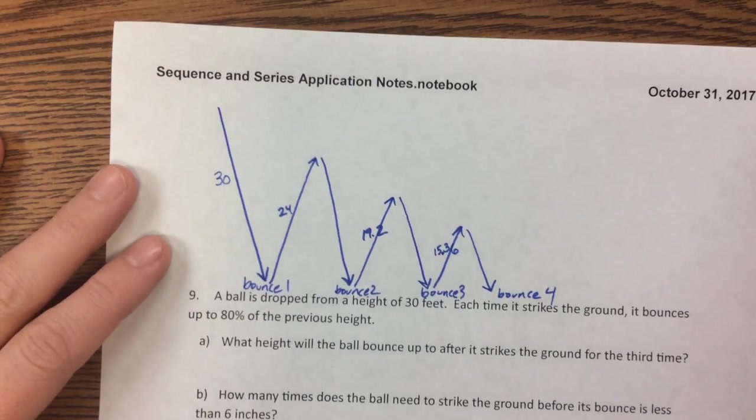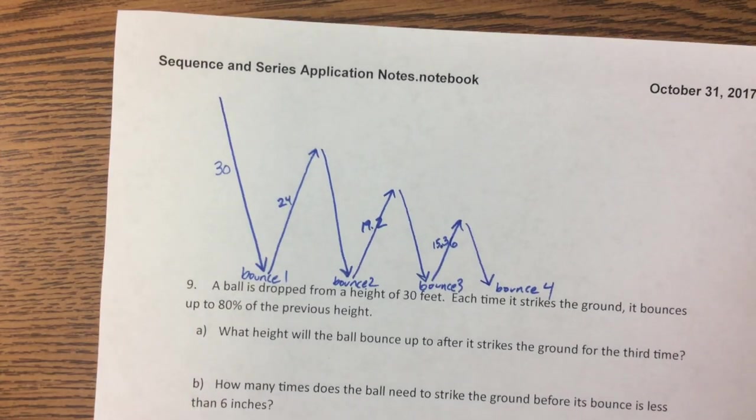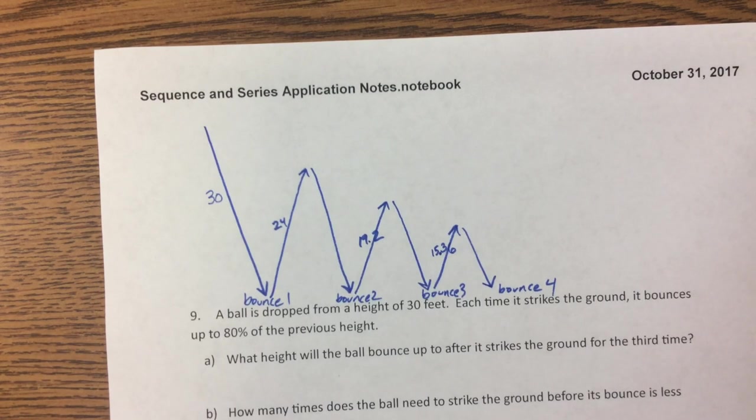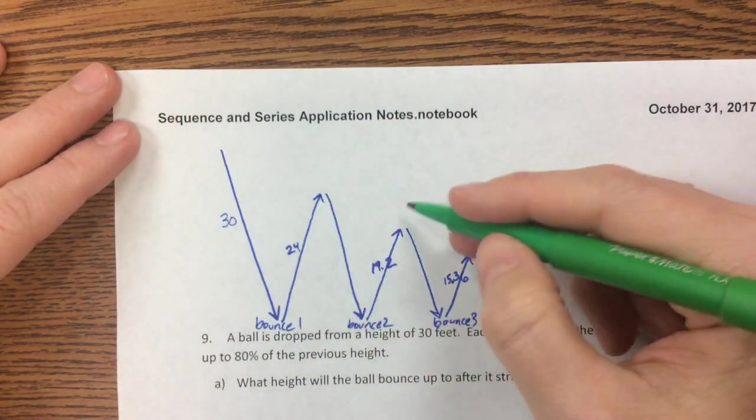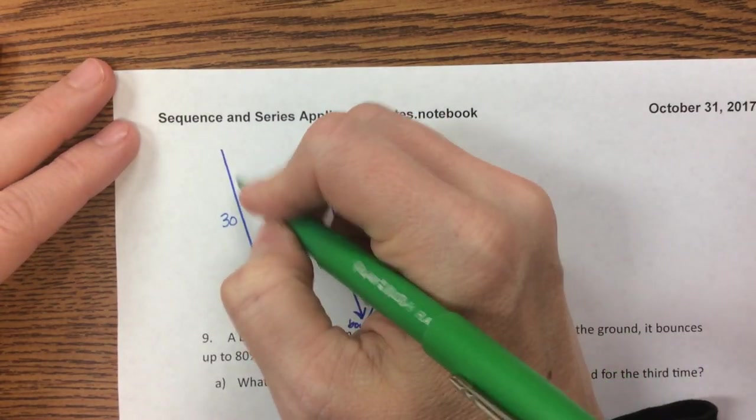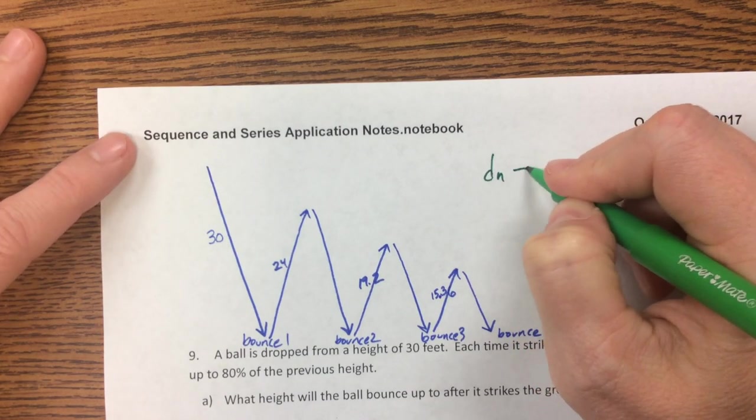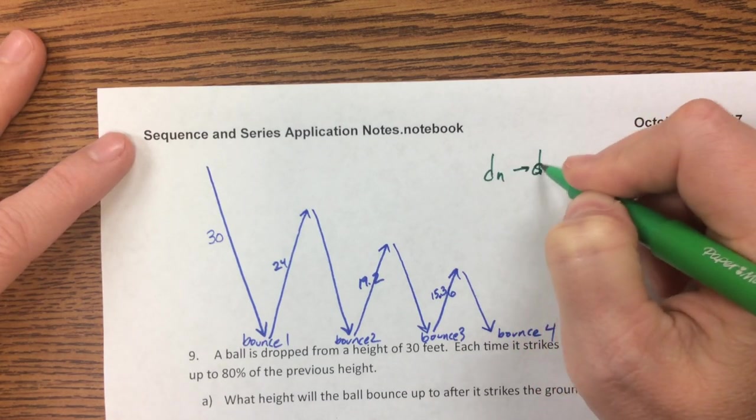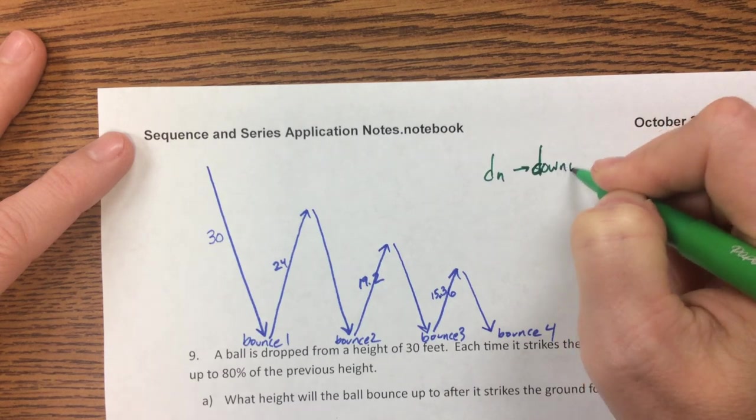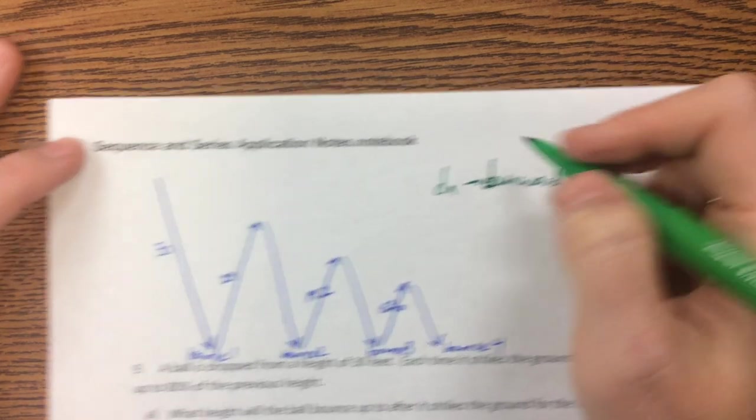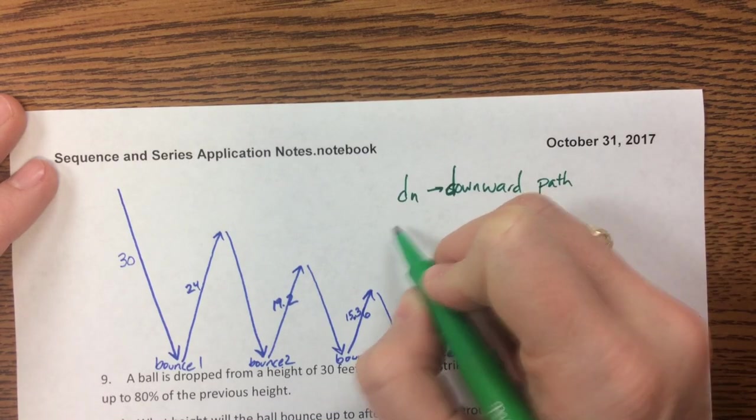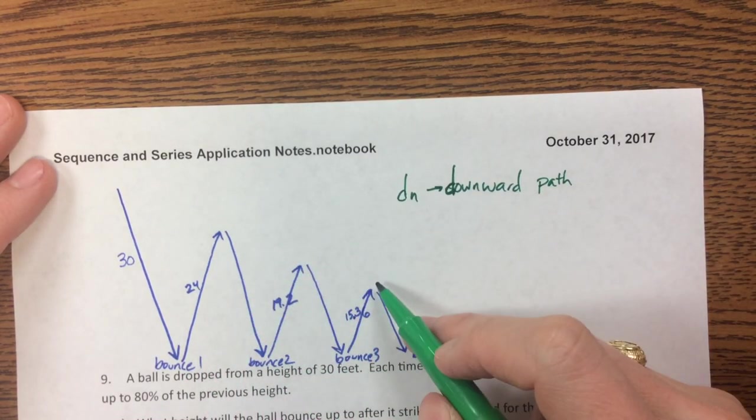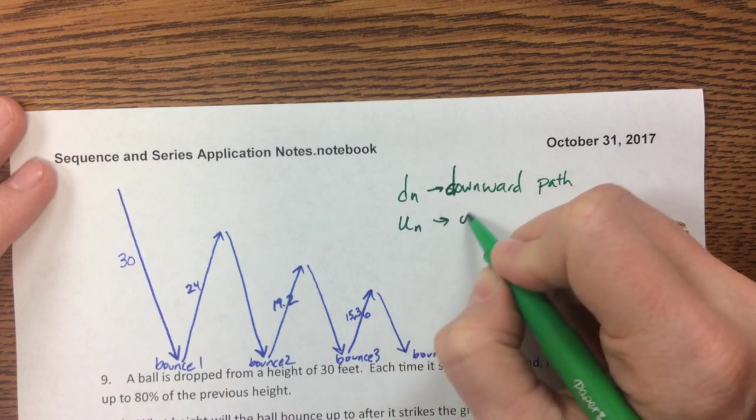But let's write some equations. The first thing I notice is that I've got basically two sequences happening at the same time, and I'm going to refer to the ones that are going downward as d_n. So d_n is the downward sequence, the downward path. And then the ones that are going up, I'm going to call u_n for the upward path.